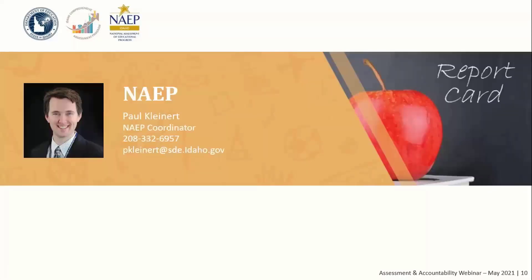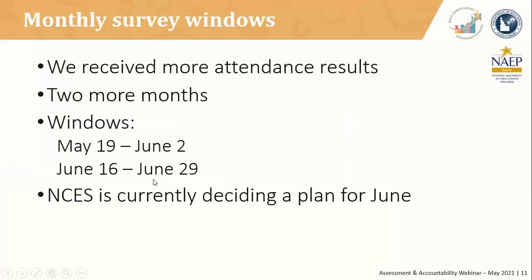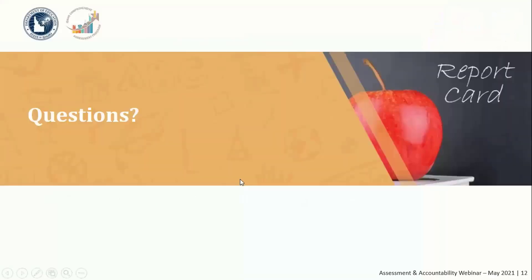Good morning. This is Paul Kleinert. I'm your National Assessment of Educational Progress Coordinator. IDAA received results for the April submission that includes March data for the monthly survey. That means we got enough responses last month, so there are just two more months in this survey. Windows will now be May 19th through June 2nd, and June 16th through 29th. I am aware that the June submission window is problematic for most schools, and I informed NCES that 62% of sampled schools are out before June 1st, 87% before June 4th, and 100% before June 16th. They let me know that information was very helpful. Contact me at any time.